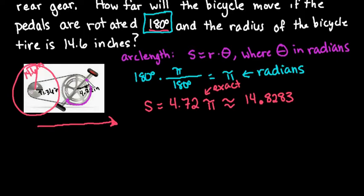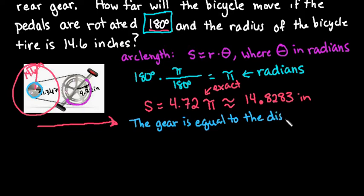We found that we rotated this arc 14.8283 inches. So what's going to happen is this gear back here, this rear gear, is going to rotate the same distance that the pedal gear rotated. The rear gear is equal to the distance of the pedal.